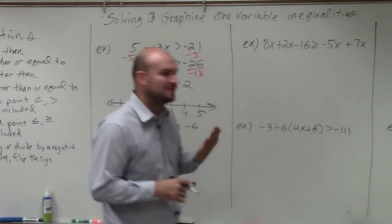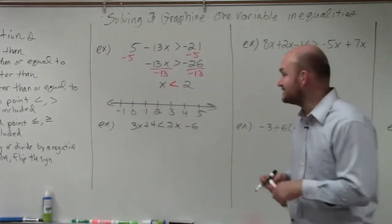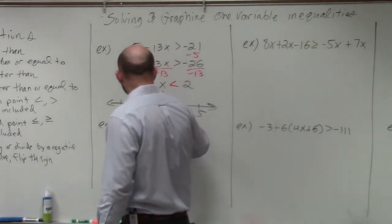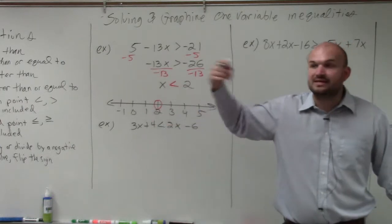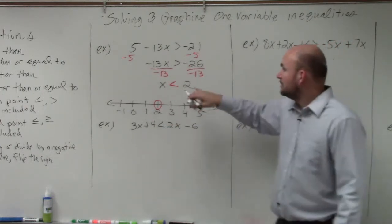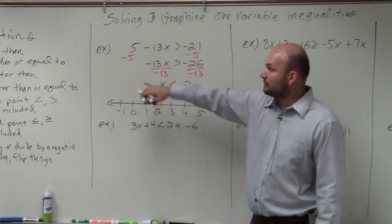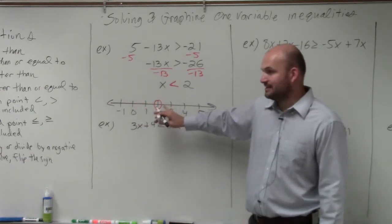So now we need to graph our solution. Our solution is x is less than 2, so we're going to do a nice big circle at 2. Then we look at our inequality symbol to determine if it is solid or open. Since that's a less than symbol, that's an open point.